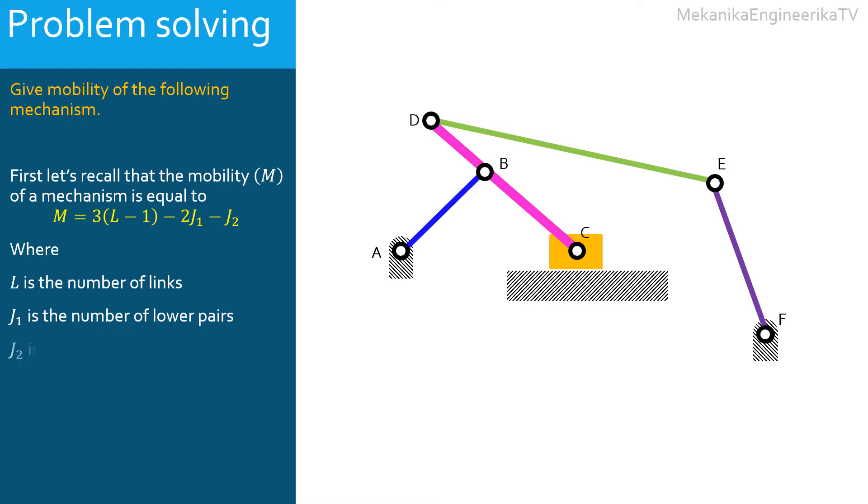And J2 is the number of higher pairs, the number of kinematic pairs that allow 2 degrees of freedom each.